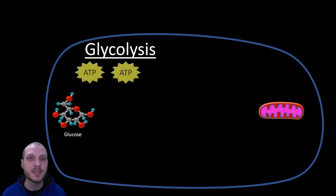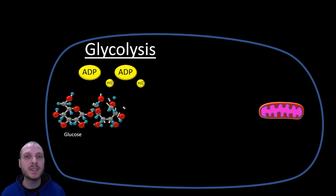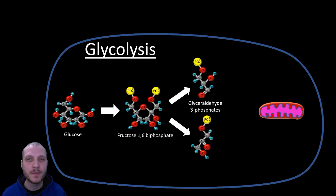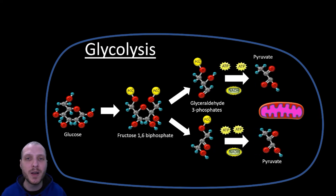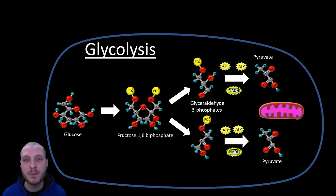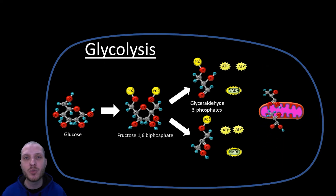Glycolysis has two main portions. In the energy investment phase, we take ATP molecules, remove those phosphates, and add them onto glucose. We then split the resulting larger molecule into two separate molecules. The final products are two molecules of pyruvate, along with a gain of four ATPs and two NADHs — a net energy return, though far less than oxidative phosphorylation. As long as oxygen is present, these pyruvate molecules can enter the mitochondria to complete the final steps before entering the Krebs cycle.